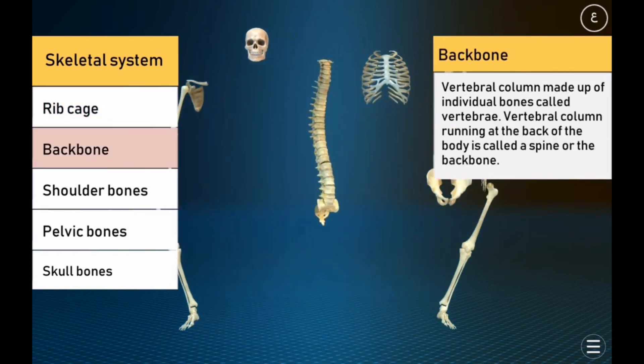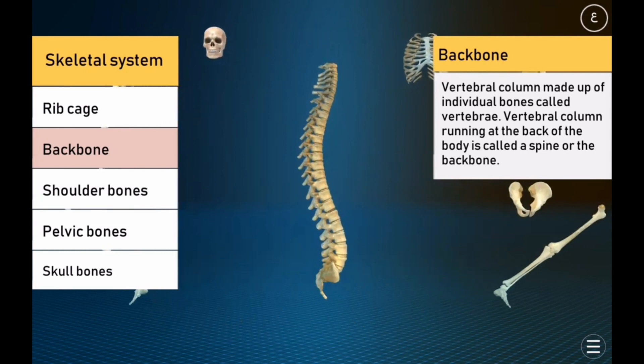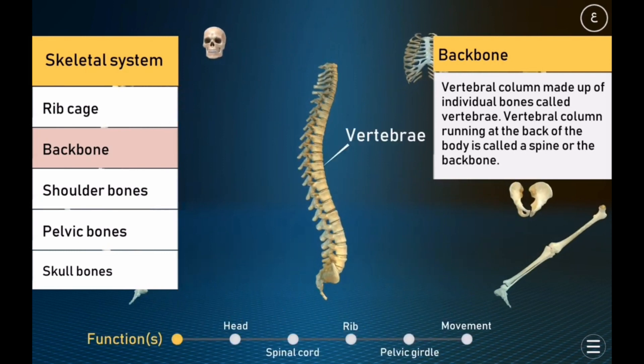Backbone. The vertebral column is made up of individual bones called vertebrae. The vertebral column, running at the back of the body, is also called the spine or the backbone.